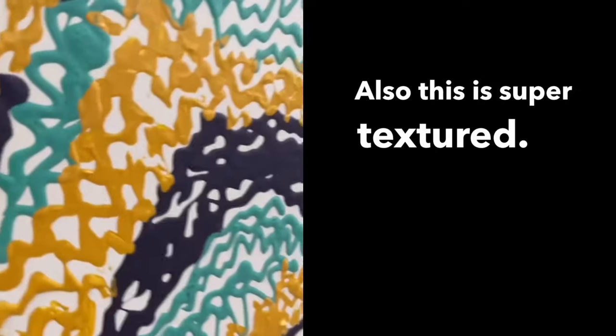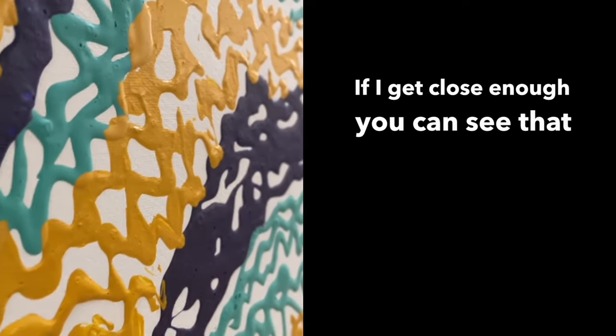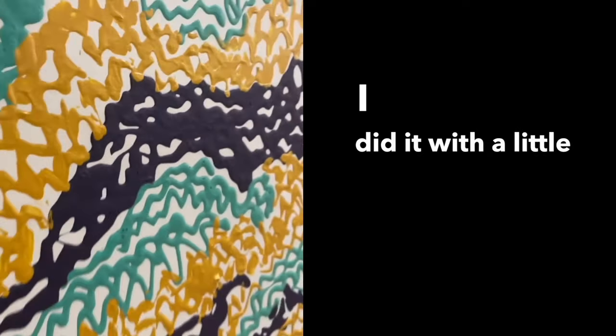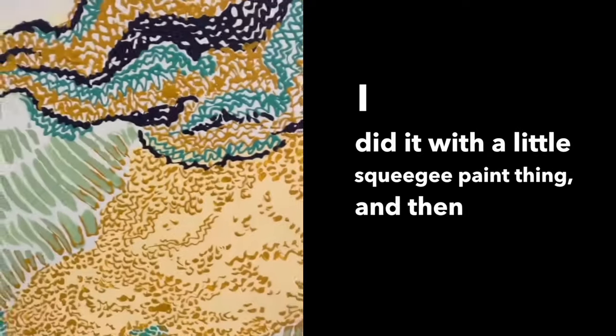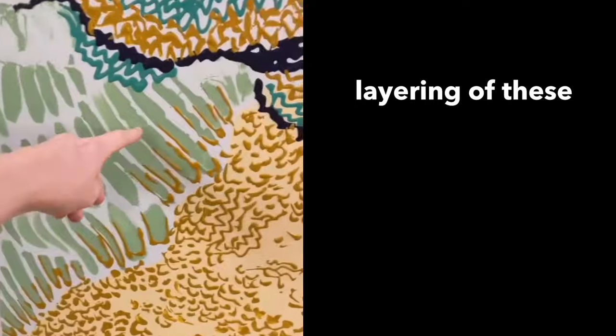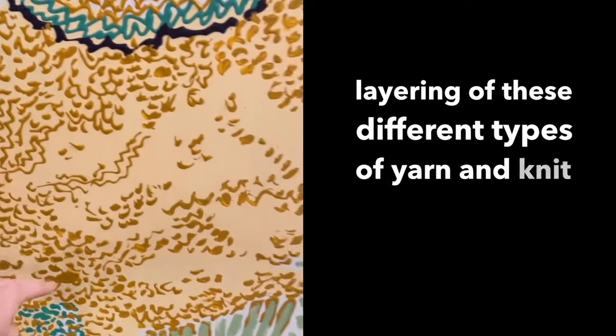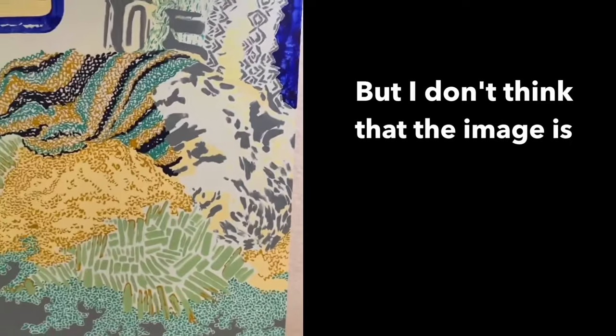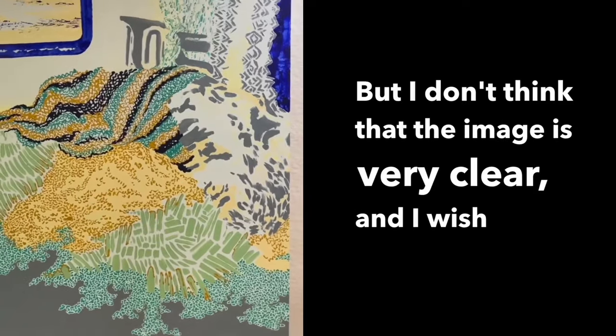Also this is super textured. If I get close enough you can see that here. I did it with a little squeegee paint thing and then also this layering of these different types of yarn and knit type blankets here. But I don't think that the image is very clear and I wish it was more clear.